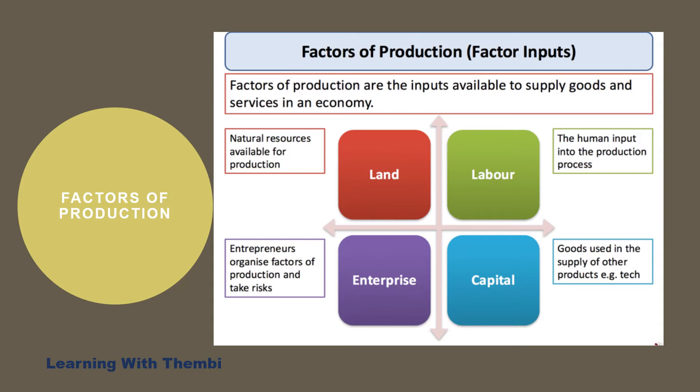Land is the natural resources which are available for production — not just the natural resources, but also its physical environment. Labour, also known as human resources, is the human input into the production process. Capital refers to goods which are used to produce other goods. And lastly, we have enterprise, commonly known as entrepreneurship, where entrepreneurs organize the other factors of production and take a business risk in order to make profit.